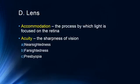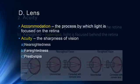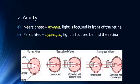This process of the lens changing shape is called accommodation — changing our focus to either near or far objects. Acuity refers to the sharpness of vision. Nearsightedness is myopia, where light is focused in front of the retina so you can see close up but not far away. Farsightedness is hyperopia, where light is focused behind the retina and you can see things far away but not close up. These conditions are corrected with different kinds of convex and concave lenses.